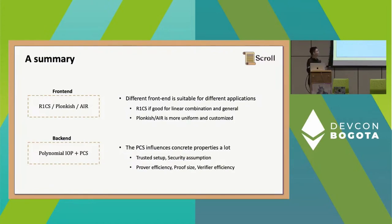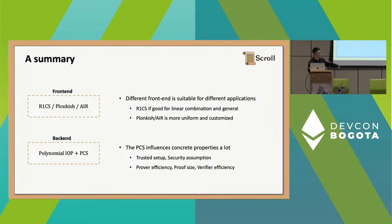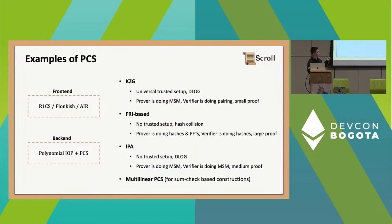Plonkish and AIR are more useful for uniform circuits — circuits with repeated structure where you can define one custom gate for that repeated structure and just increase the length of your execution trace. They are also more customizable: you can have lookups and variable components. On the back-end, what really influences your concrete properties is the polynomial commitment scheme you are using. For example, it will influence whether you have a trusted setup, your security assumption, your concrete prover efficiency, proof size, and verifier efficiency.